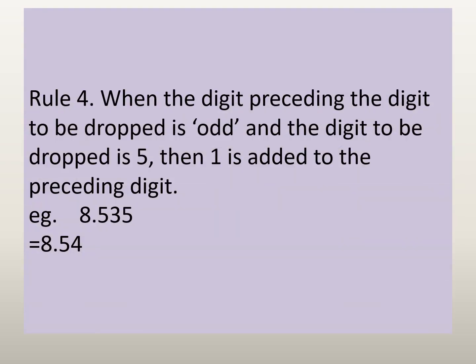The next rule: when the digit preceding the digit to be dropped is odd and the digit to be dropped is 5, then 1 is added to the preceding digit. Here we have the example 8.535. The digit preceding the digit to be dropped is 3, which is an odd number. We have to drop 5 but add 1 to 3 as it is odd. So when rounded, the number becomes 8.54.